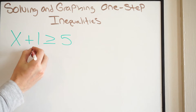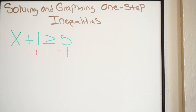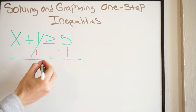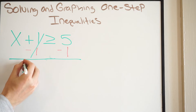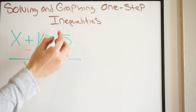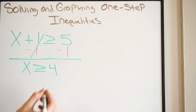So if this was an equation, how would we solve? Well, we would simply minus one on both sides, and that's exactly what we're going to do here with the inequality. So we're going to minus one on both sides of the inequality, just like you would if it were an equal sign.